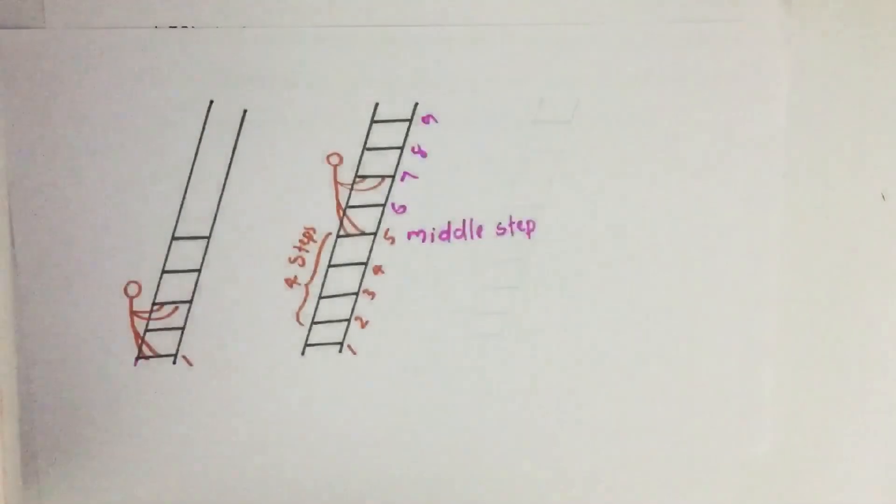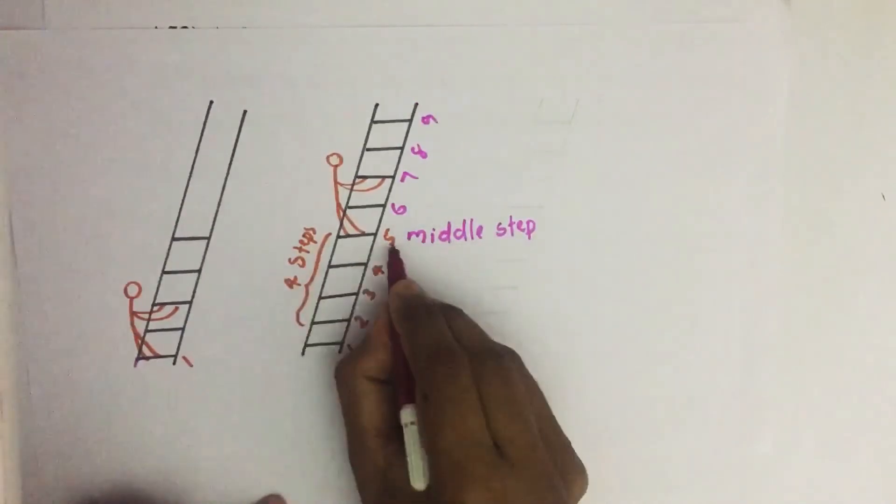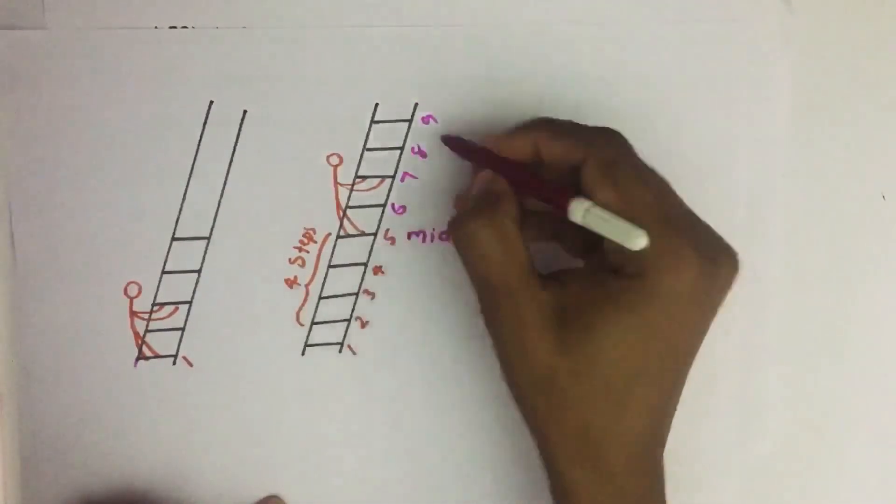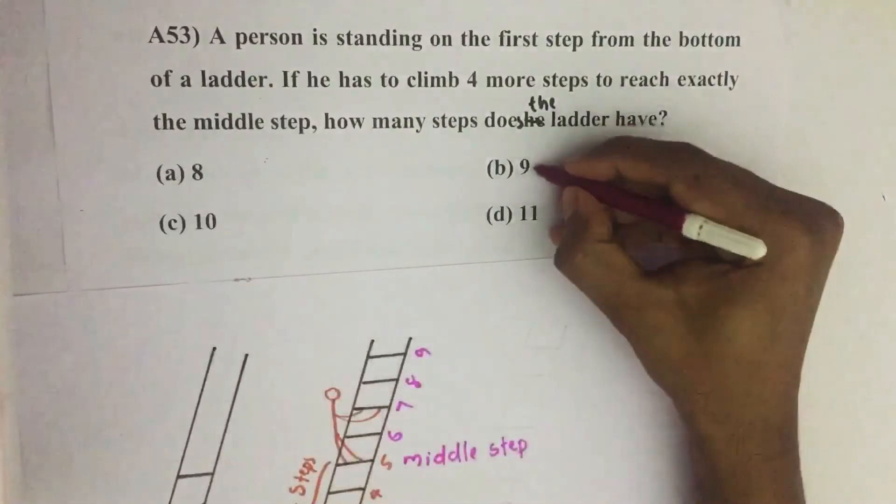There will be total nine steps. Fifth is the middle step. Then total number equal to nine. Our answer is option B, nine.